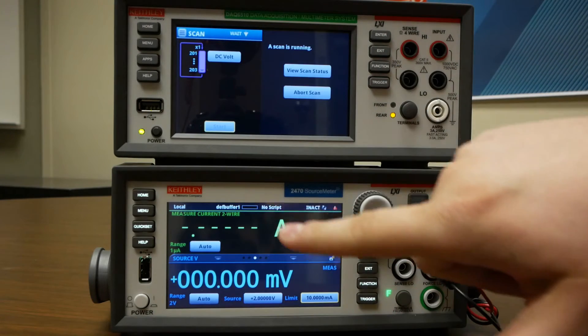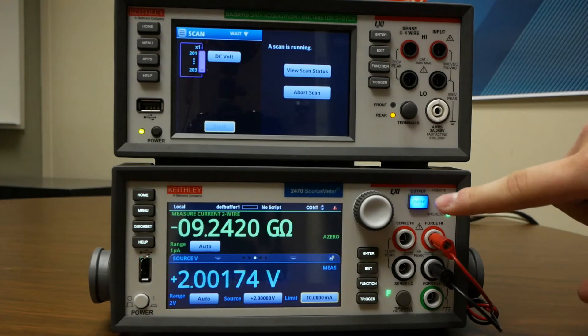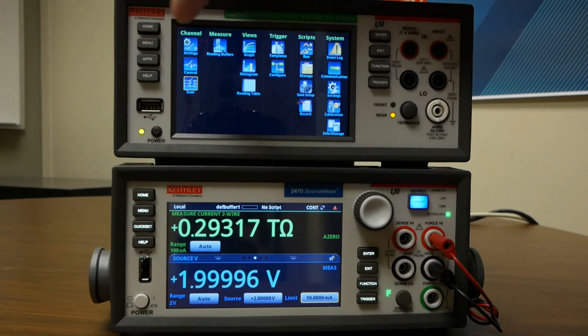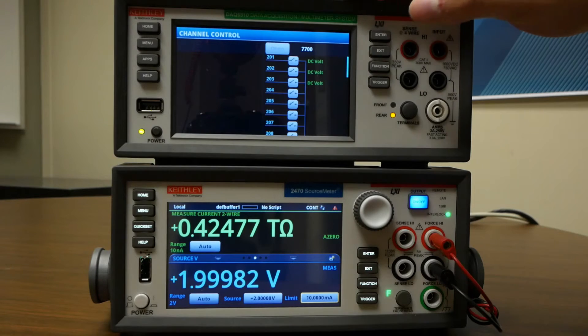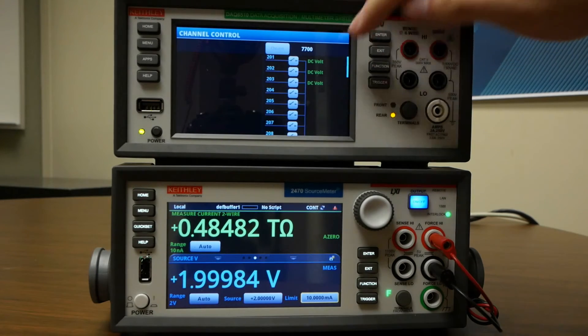So now we'll press start scan. Turn the output on in our SMU. And I'm going to go to the control option here. That way you can see when the channels change.